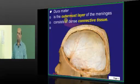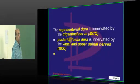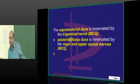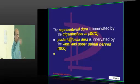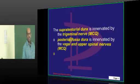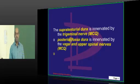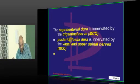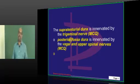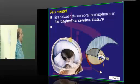Now, dura mater — the outermost layer, purely connective tissue, and a favorite question of the examiner. Dura is there everywhere, wherever the brain is. You can divide the dura into that part which is above the tentorium cerebelli and which is below it. Supratentorial dura is supplied by the trigeminal nerve. Infratentorial — that means the dura in the posterior cranial fossa — it is supplied by the vagus and the upper spinal nerves. This is a very fine question frequently asked by the examiner, which you have to answer emphatically.